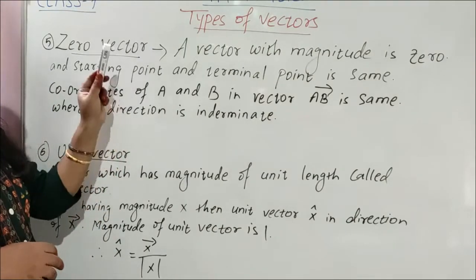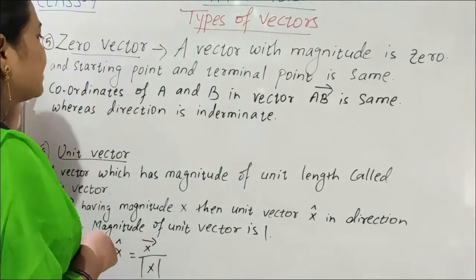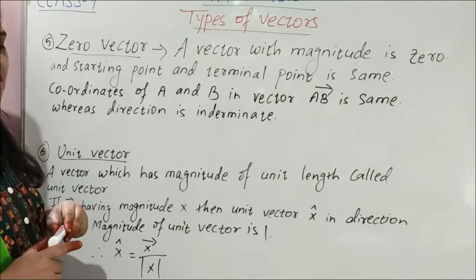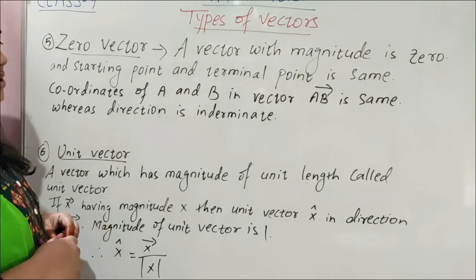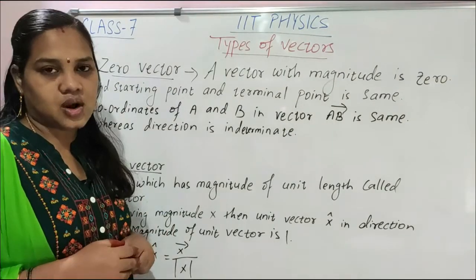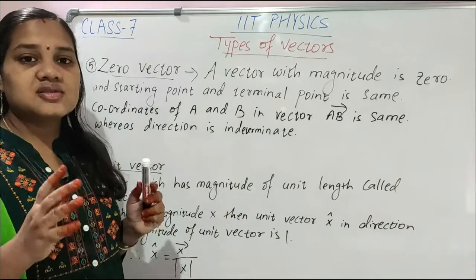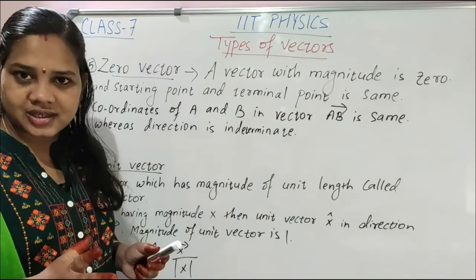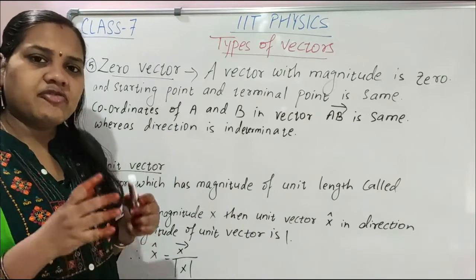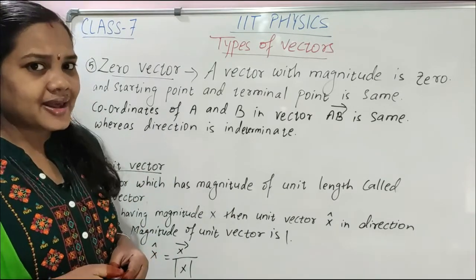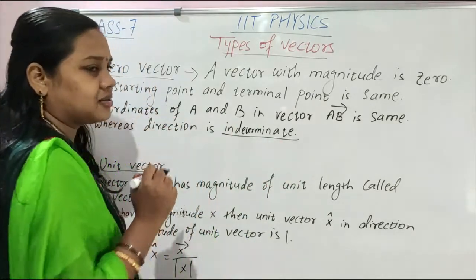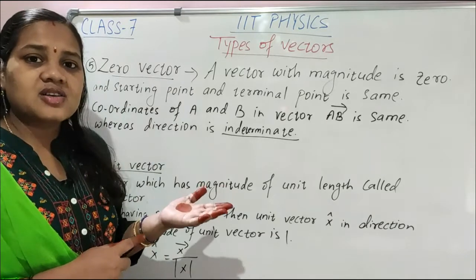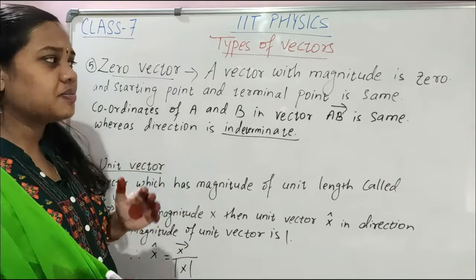Zero vector means a vector whose magnitude is zero. A vector with magnitude zero — its starting point and terminal point are the same. If magnitude is zero, what about the direction? Direction is indeterminate, means it cannot be determined. A vector whose magnitude is zero, its direction cannot be determined.